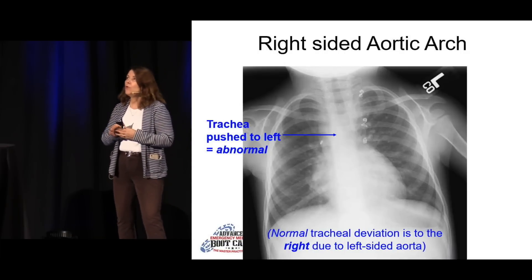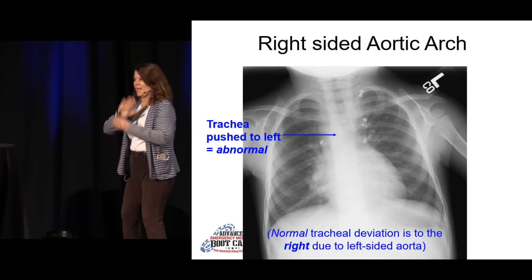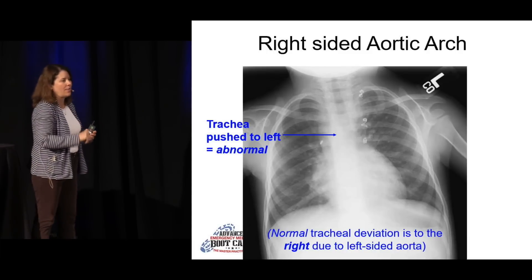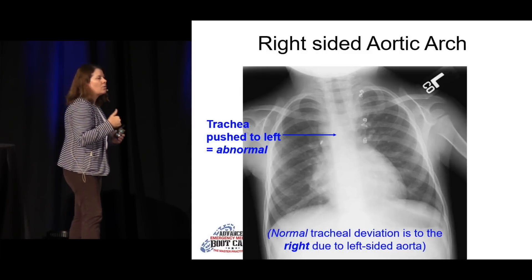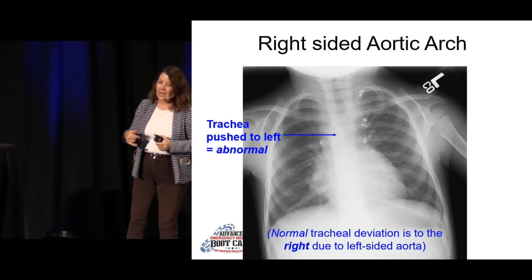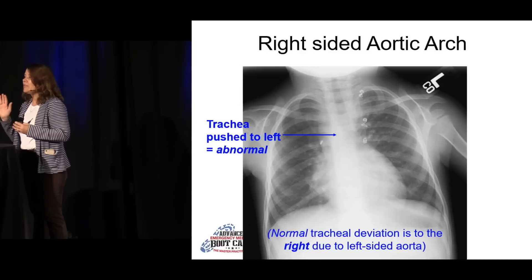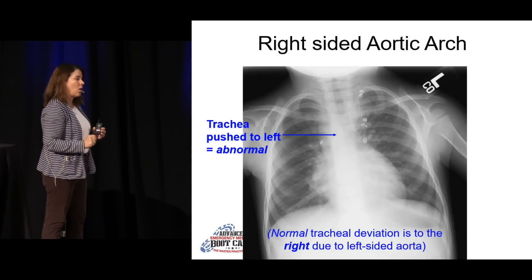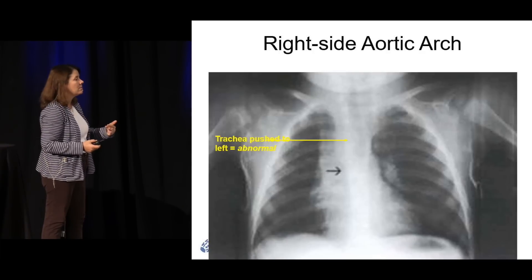The last thing is this right-sided aortic arch. Normally our aorta curves over to the left, so our trachea should be a little bit pushed to the right — that's normal. If you see the trachea pushed to the left, that's not the thymus — thymus doesn't do that. On the differential is a right-sided aortic arch, and right-sided aortic arches have a high propensity for congenital heart disease. So if you see that trachea abnormally pushed to the left and you have a cyanotic kid in front of you, that may be a telltale sign you're dealing with congenital heart disease. Trachea pushed to the left is not normal — it's not the thymus, something else.